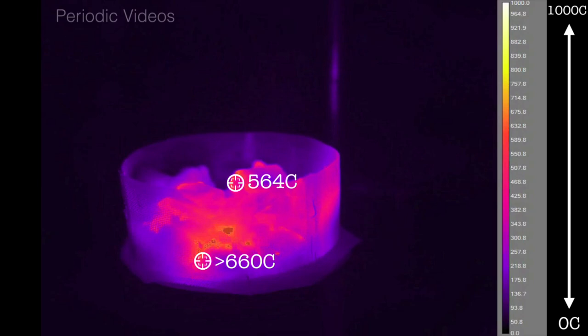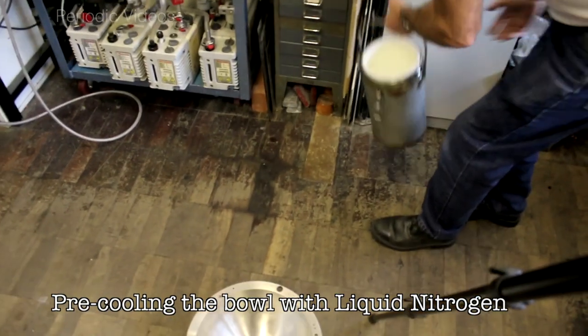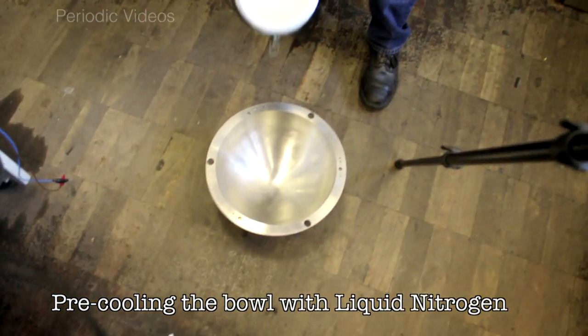Now remember, we only have one thermos of liquid oxygen, and as soon as you pour something cold into the bowl, which starts at room temperature, a lot of it will boil away. So Neil didn't want to waste the oxygen, so he cooled the bowl, pre-cooled it, with liquid nitrogen, because it has far more liquid nitrogen than oxygen.